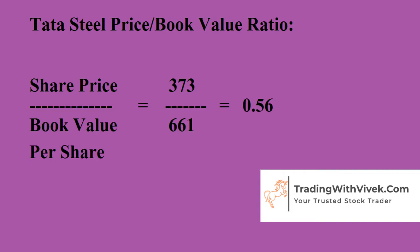Now take JSW Steel: the share price is 220 and the book value is 151, so the Price-to-Book Value ratio would be 1.45. Here we are paying 1.45 rupees for every 1 rupee worth of assets. So the shares of Tata Steel are available at a cheaper valuation compared to JSW Steel — this is how the PBV ratio is used in fundamental analysis.